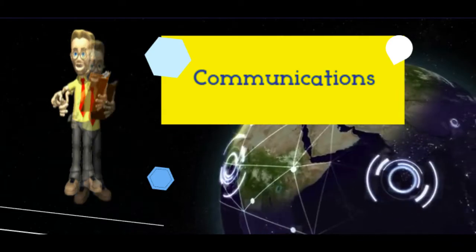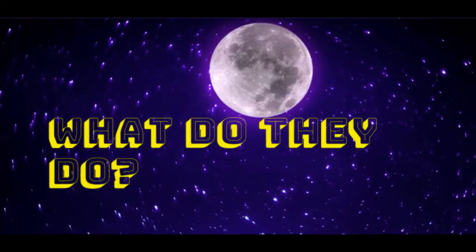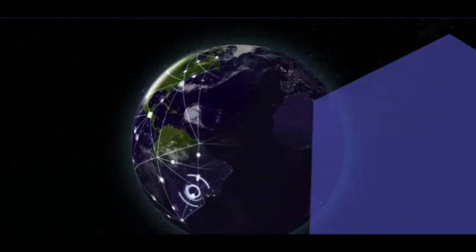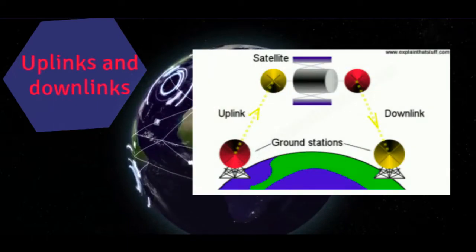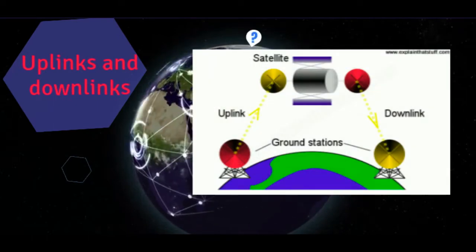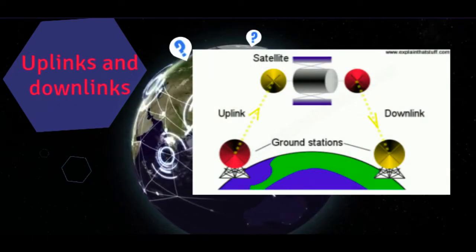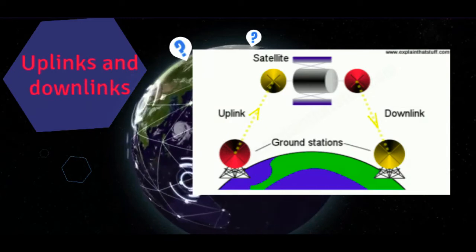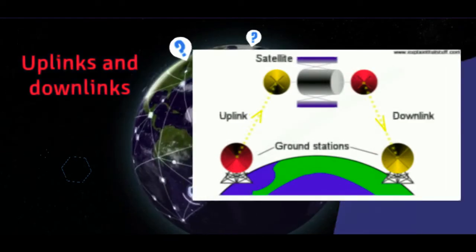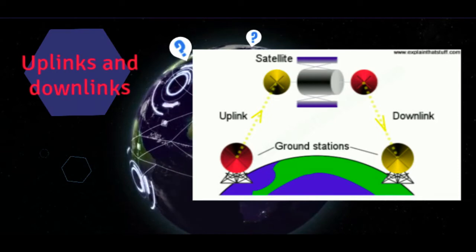For intercontinental signals, there are uplinks and downlinks. If you want to send something like a TV broadcast from one side of Earth to the other, there are three stages involved. First, there's the uplink, where data is beamed up to the satellite from a ground station on Earth.